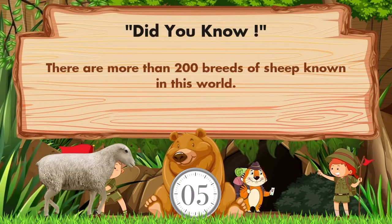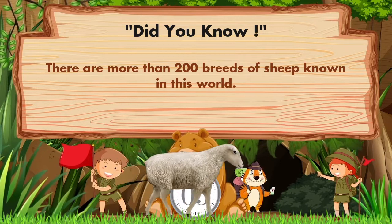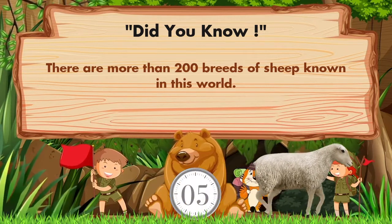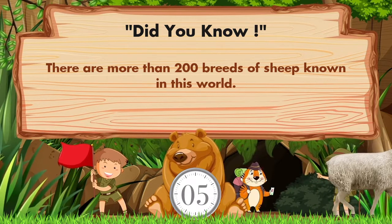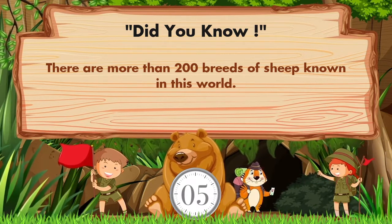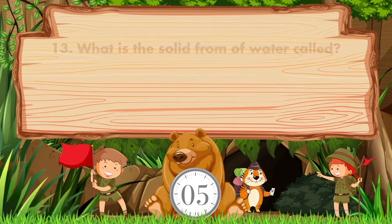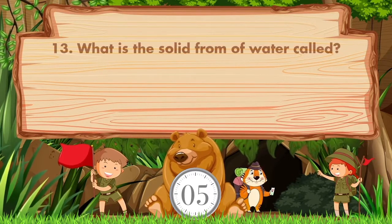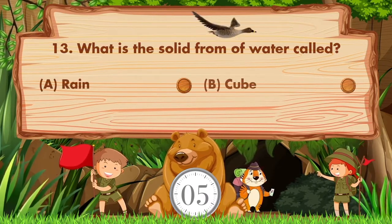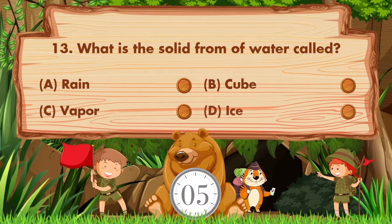Did you know there are more than 200 breeds of sheep known in this world? What is the solid form of water called? Option A: rain, B: cube, C: vapor, D: ice.